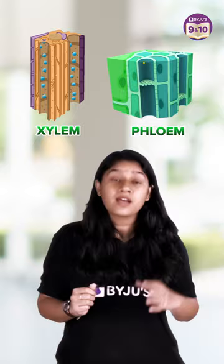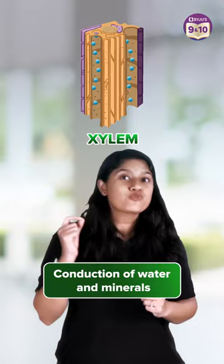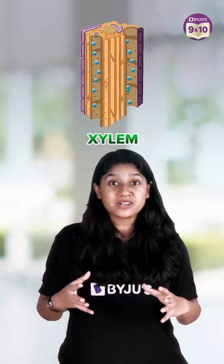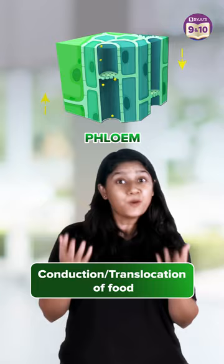Xylem is a very important conducting tissue that helps in the conduction of water and minerals from the soil to the top of the plant. It carries water and minerals only in one direction, hence unidirectional flow. Whereas phloem helps in the conduction or translocation of food in both directions — hence we call it bidirectional.